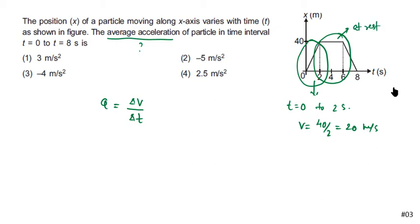In between 6 to 8 seconds, similarly 40 by 2, but this has a negative slope. So from t equals 6 seconds to t equals 8 seconds, velocity would be minus 40 by 2.